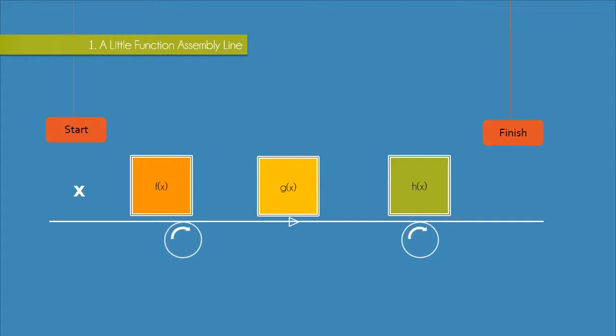So let's just watch here what happens as x passes through this assembly line. x will first be passed to f of x where f of x applies its rule and spits out the output.